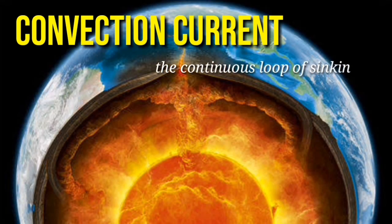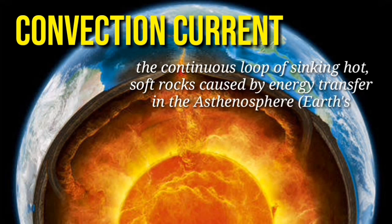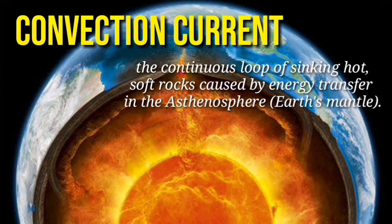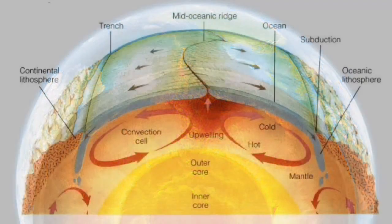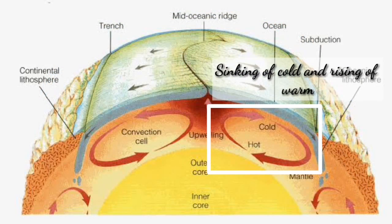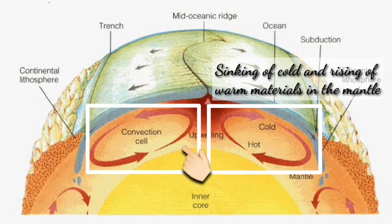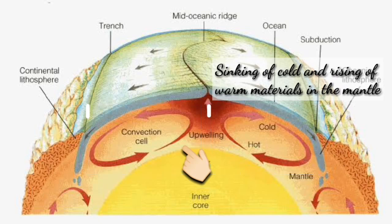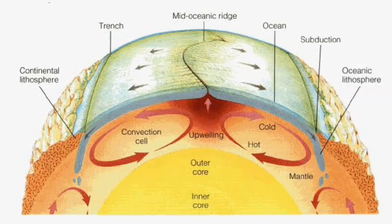Convection helps to move heat within the Earth. Convection currents refer to the continuous loop of sinking and rising hot soft rocks caused by energy transfer in the asthenosphere. Convection creates loops of sinking and rising materials in the mantle — this circular pattern is called a convection cell. This carries heat to the surface of the mantle much faster than heating by conduction. A convecting mantle is an essential feature of plate tectonics.